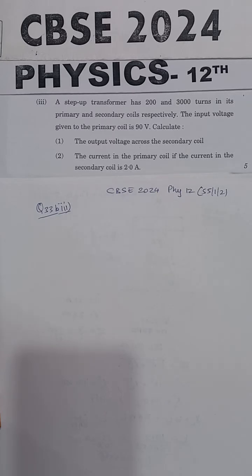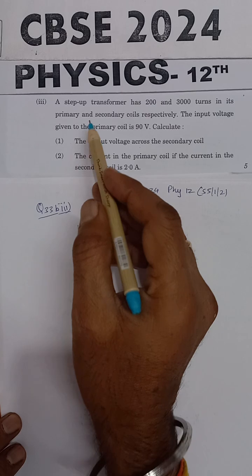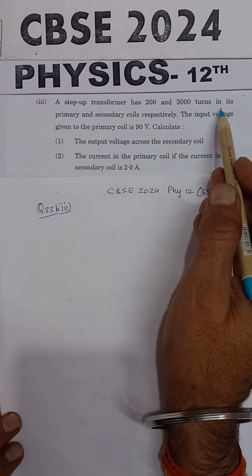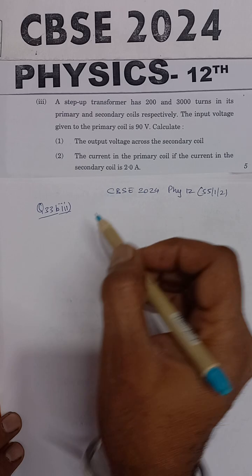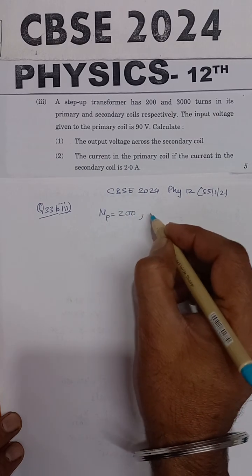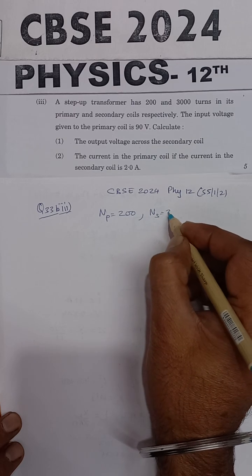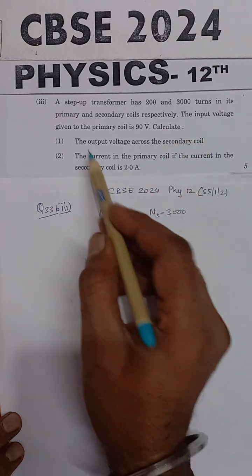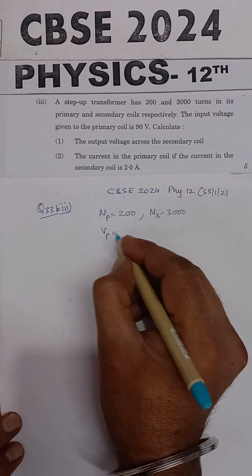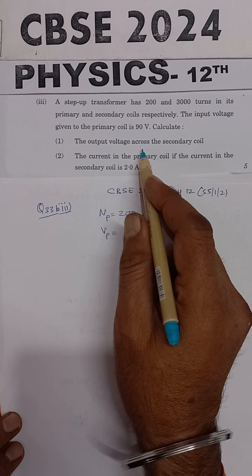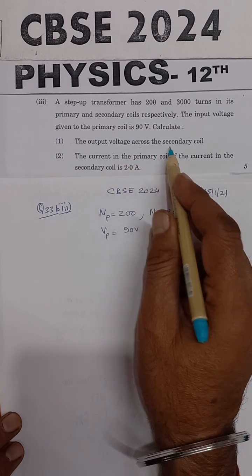This question is from the CBSE Physics 2024 board examination. The problem states: a step-up transformer has 200 and 3000 turns in its primary and secondary coils. The number of turns in the primary is 200 and in the secondary is 3000. The input voltage to the primary is 90 volts. Calculate the output voltage across the secondary.